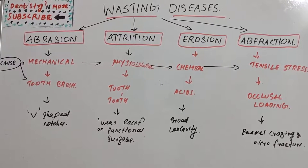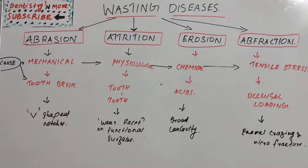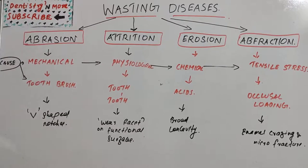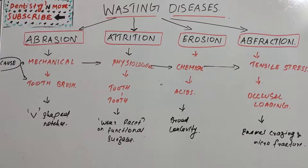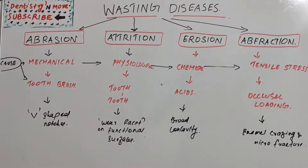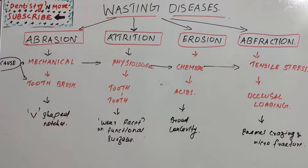There are many habits causing abrasion, such as misuse of dental floss and toothpicks, pipe smoking, and thread biting. Abrasion can also be seen in people who hold hair grips between their teeth — such as seamstresses and hairdressers. This mechanical force, mainly due to toothbrush use and these other reasons, results in enamel, dentine, or cementum loss appearing as V-shaped notches.